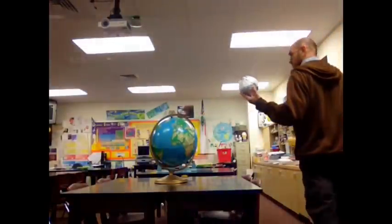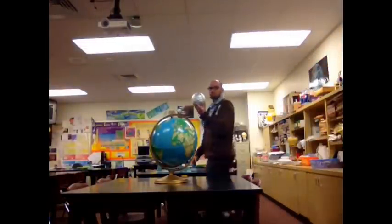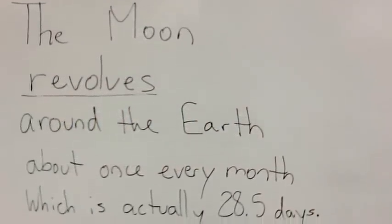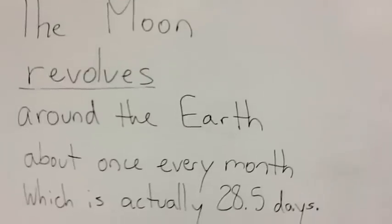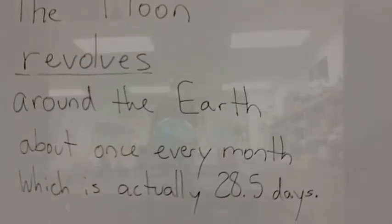The Moon revolves around the Earth once every month, which is actually 28 and a half days.